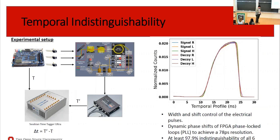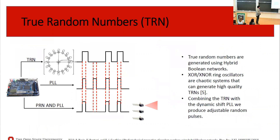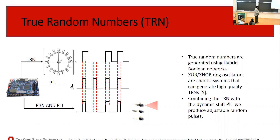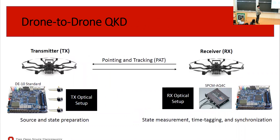We also need to satisfy the BB84 protocol's requirement for random pulse generation. We use hybrid Boolean networks based on XOR/XNOR ring oscillators, which are essentially chaotic systems capable of producing very high-quality random numbers. By combining the true random number generator output with our pulse width and shift control, we produce random and adjustable pulses used to drive the LEDs and create our quantum states.